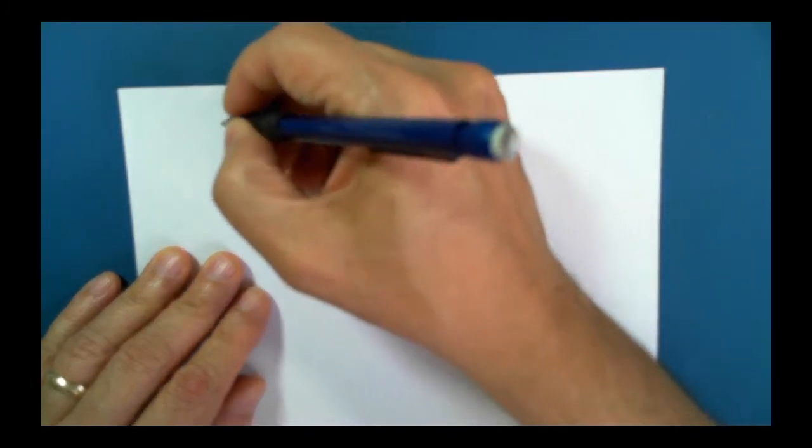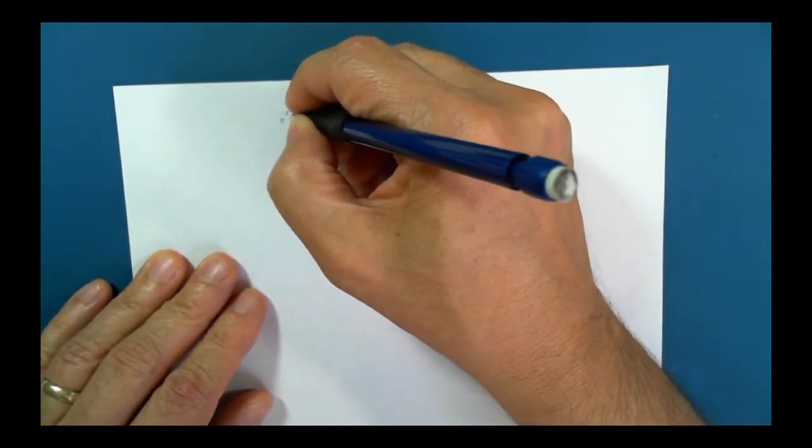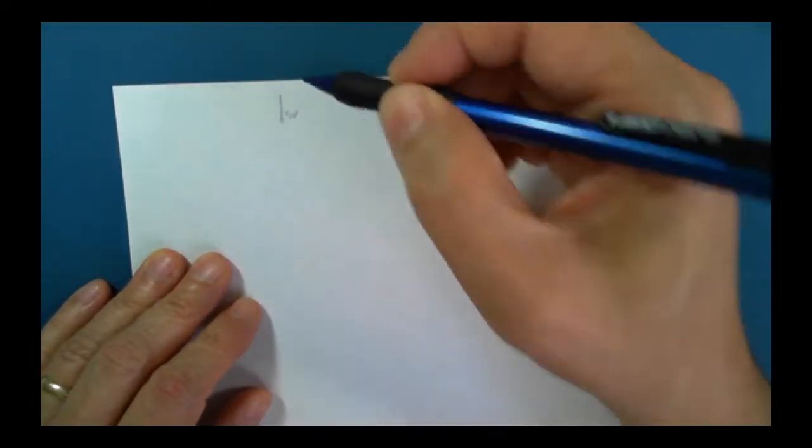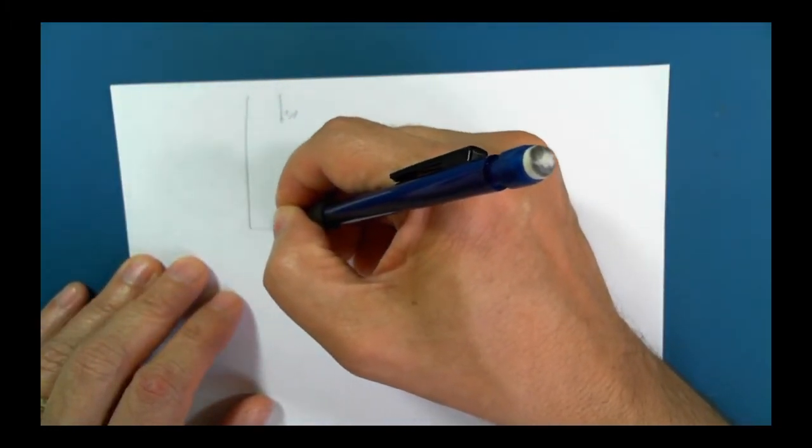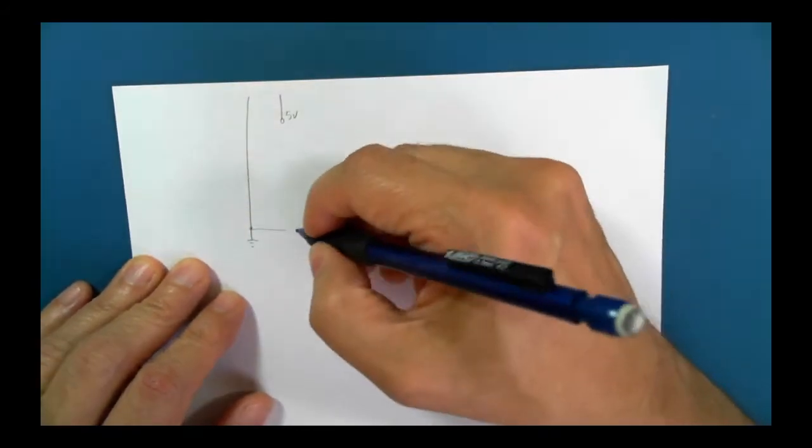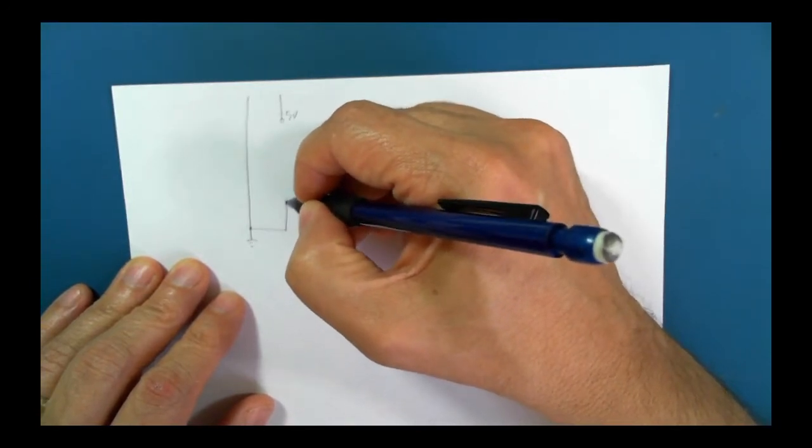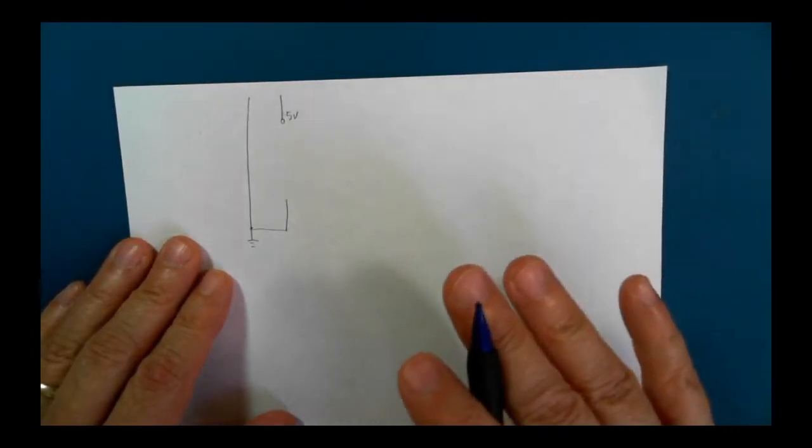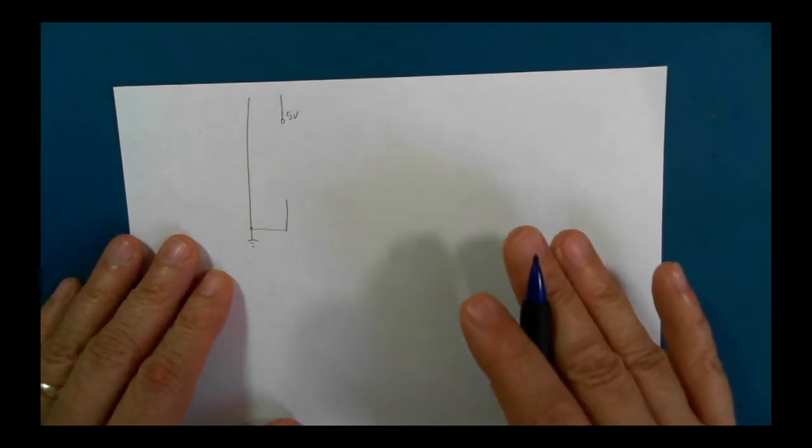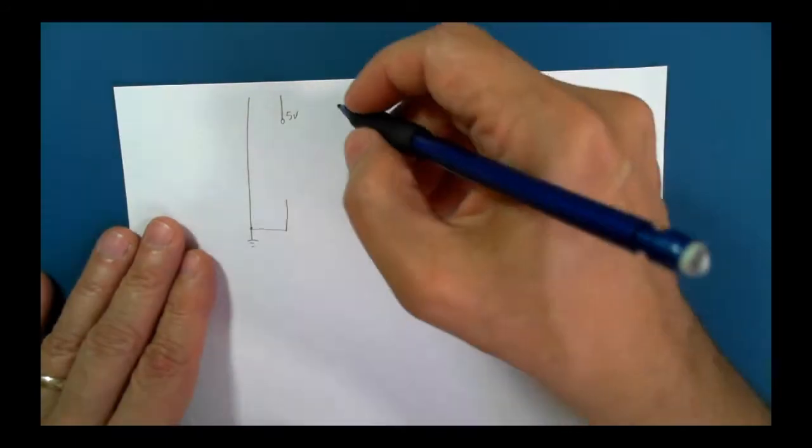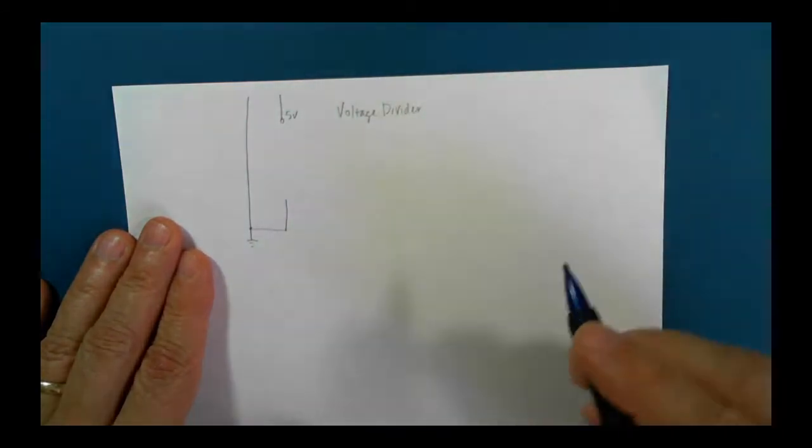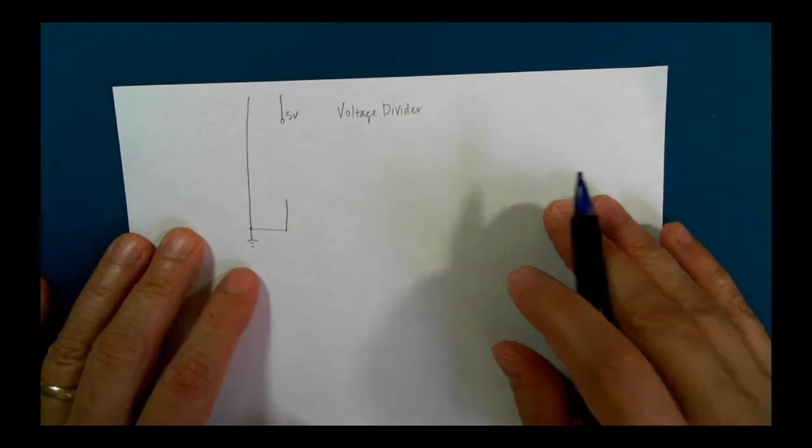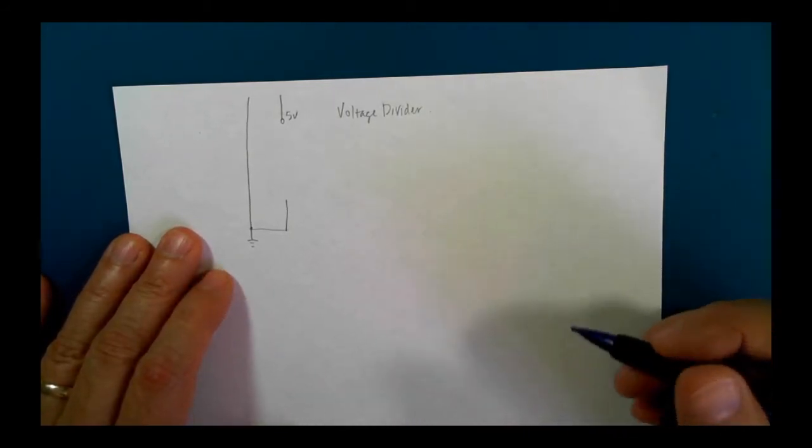We've got our 5 volts coming in from the Arduino and ground coming from Arduino. And before we actually get to explaining analog inputs, I think I need to introduce a concept called the voltage divider, because a voltage divider is what you're going to need to set up in order for the analog sensor to be read properly by the Arduino.